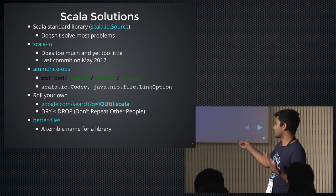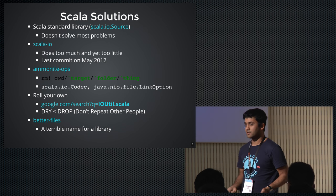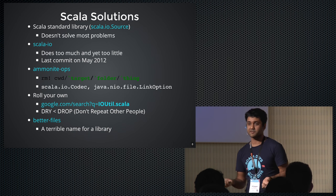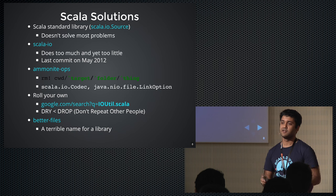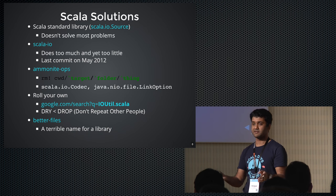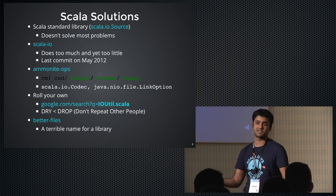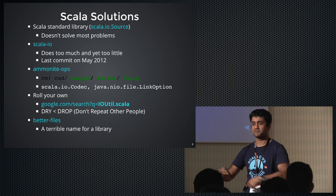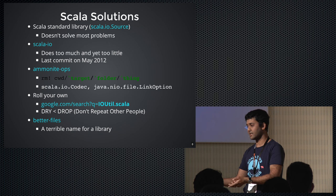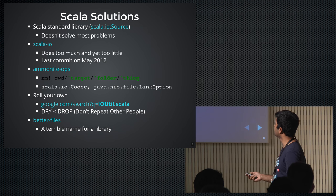The last option — the one I'm talking about — is Better Files. It's a really bad name for a library, but I'm stuck with it. The reason is I started adding implicits to the Java File class, called it the BetterFile implicit class, and that's how the name started.